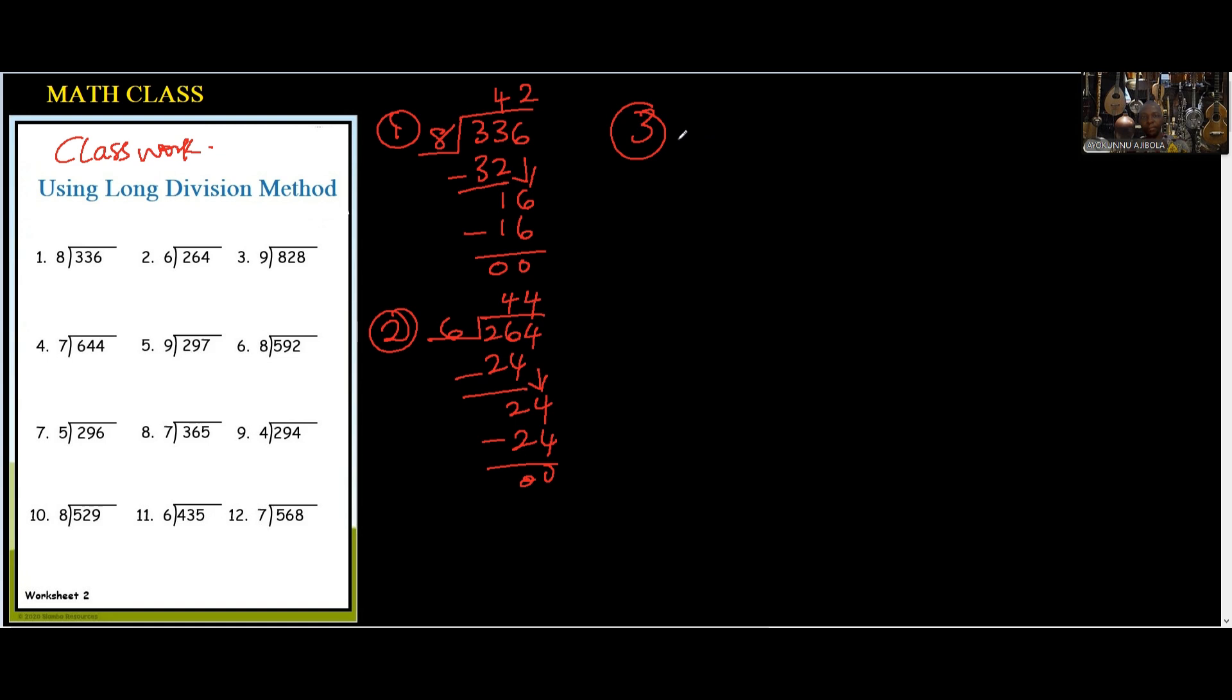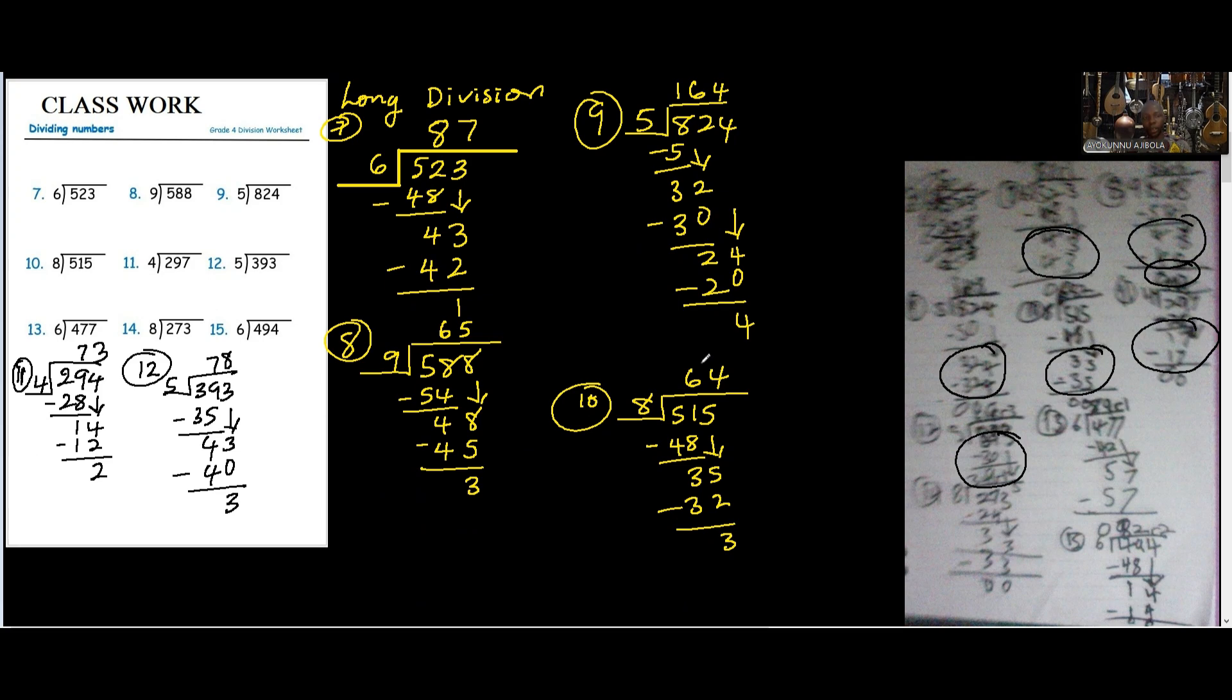You say... Yeah. 828. You have 9. 9 and 8 can be possible. So 9 and 82 is 9. 9 times 9 is 81. Then... Remain the 1. Then... So... You drop down the 8. That's 18. 9 and 18 is 2. So 2 times 9. That's 18. Then when you subtract, you have a remainder of 0. So... You're gonna do this remaining 9 questions. As your classwork. Okay. But firstly, you need to put down all of these corrections.